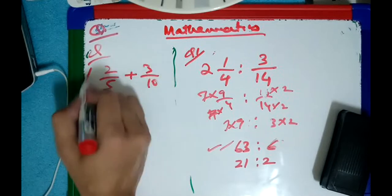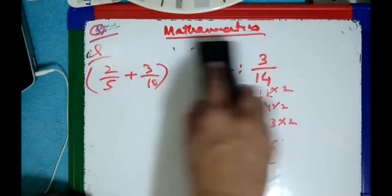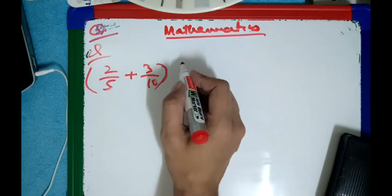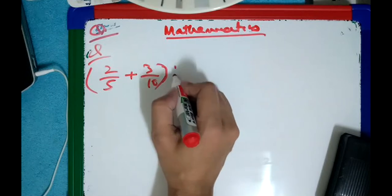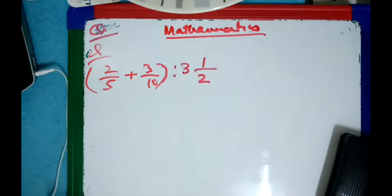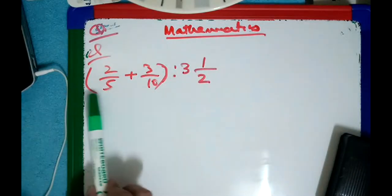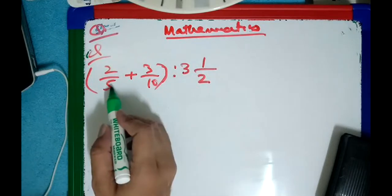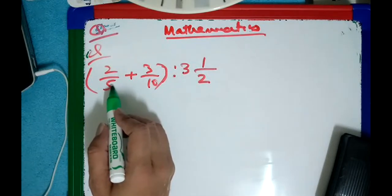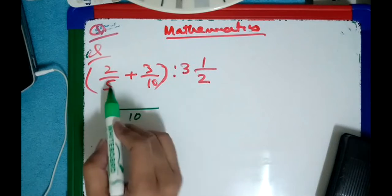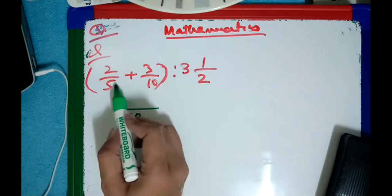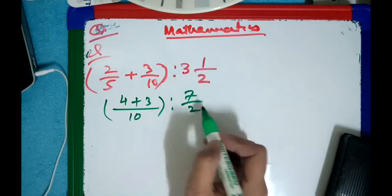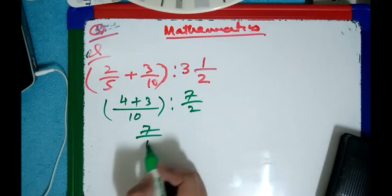Multiply and then 3 over 10 divided by 3 whole 1 over 2. Now I create a little more complex situation. In this situation, I will try to bring this one as a single denominator first. If I do it orally, I can multiply 5 by 2 to get 10. So: 5 × 2 = 10, 2 × 2 = 4, then 4 + 3 = 7. And for the right side: 3 × 2 = 6, plus 1 = 7 over 2.